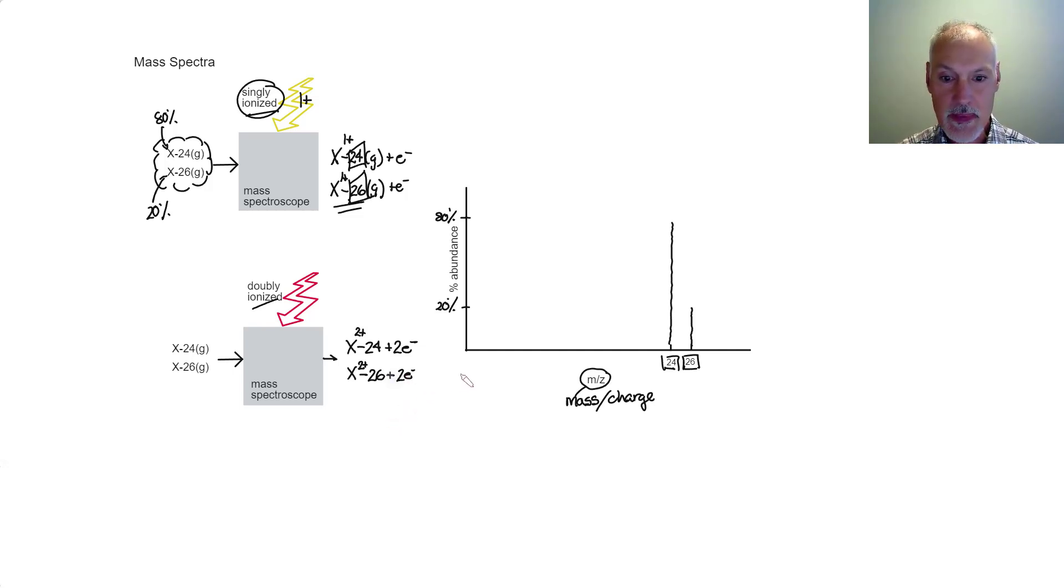Now, if I went to plot this data on the graph, I would have to divide the mass by two, because I've removed two electrons. So I would have had a peak, say down here at 12. If I take 24 and divide by two, it would still have been 80 high.